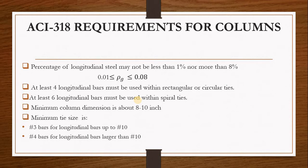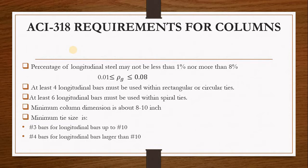We need to take a look at the code we are going to be using to design a column. The code we are going to be using is the American code — ACI 318. ACI basically stands for American Concrete Institute. We're going to be using the American code to design our column, and we need to follow the requirements that the code gives us in order to properly design columns.